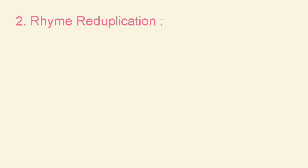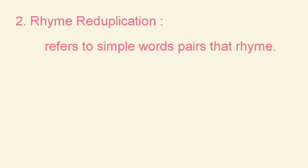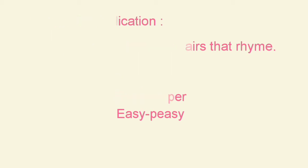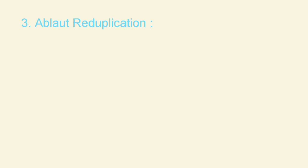The next type is rhyme reduplication. Rhyme reduplication refers to simple word pairs that rhyme. For example, like super-duper or easy-peasy. Easy-peasy means very easy.